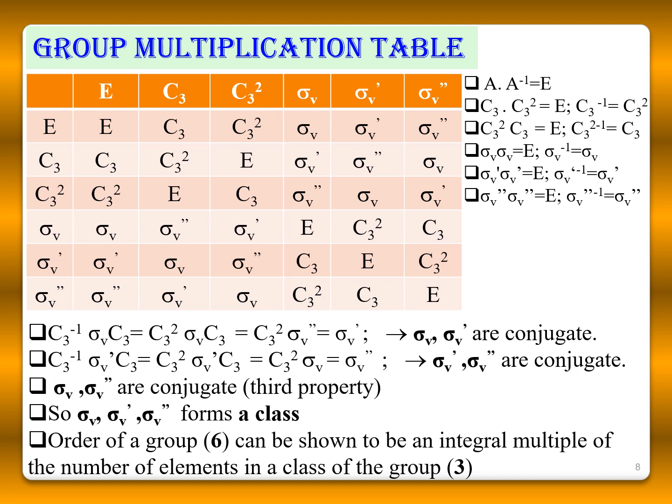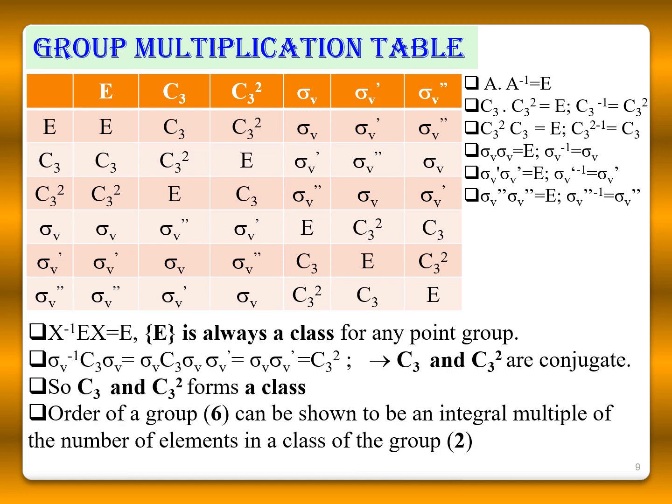From this, σv, σv prime, and σv double prime form a class. The order of the group here is 6, which is an integral multiple of the number of elements in this class, which is 3 — so the integral value is 2. Similarly, E is always a class for any point group because X inverse E X equals E. For C3, using X equals σv, we end up with C3², so C3 and C3² are conjugate and form a class. Here the order of the group is 6 and the number of elements in the class is 2, confirming that the order of the group is an integral multiple of the number of elements in the class.